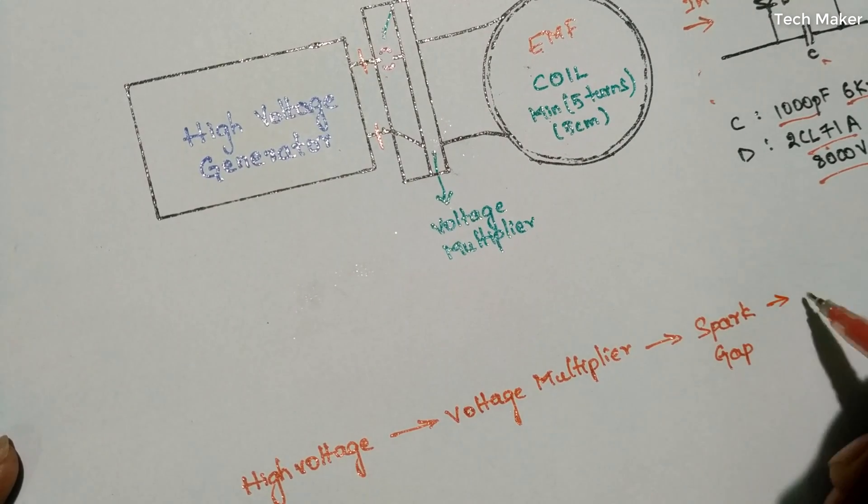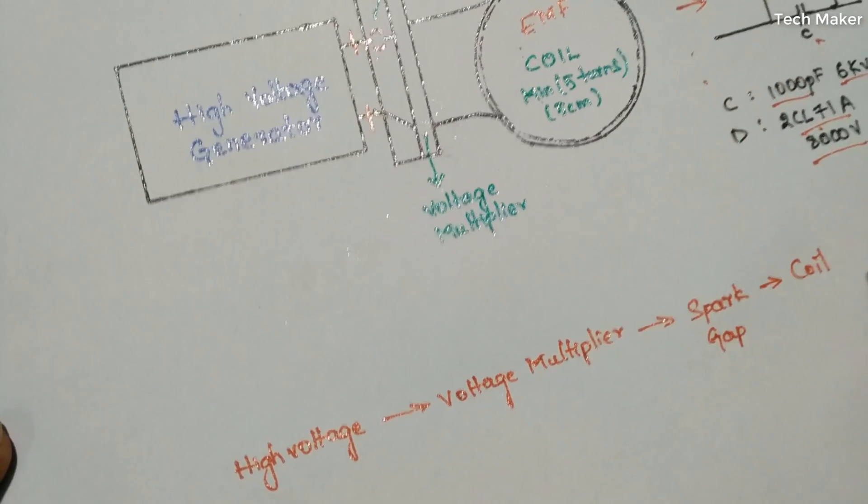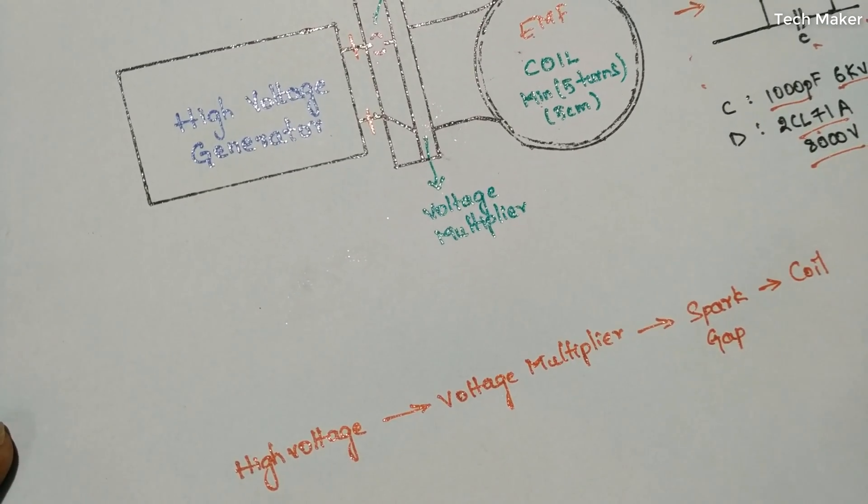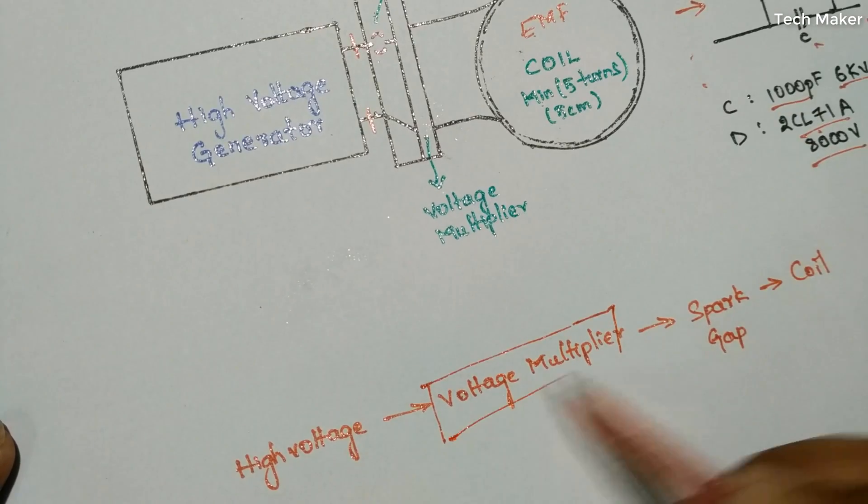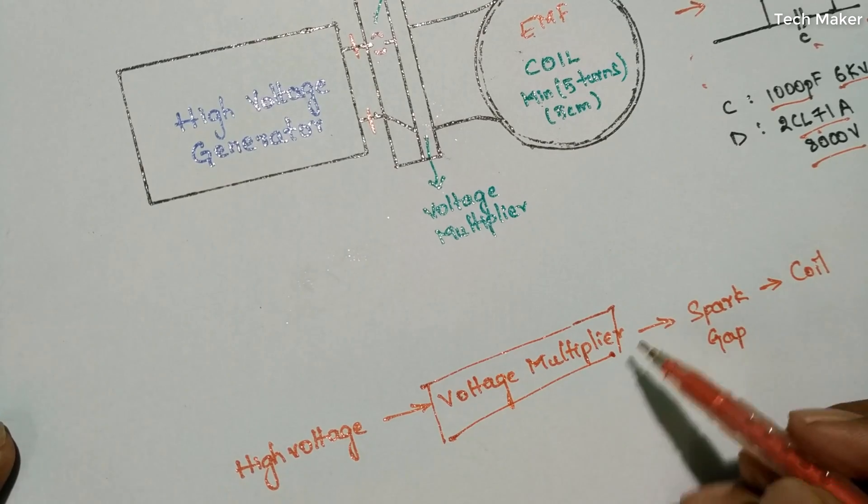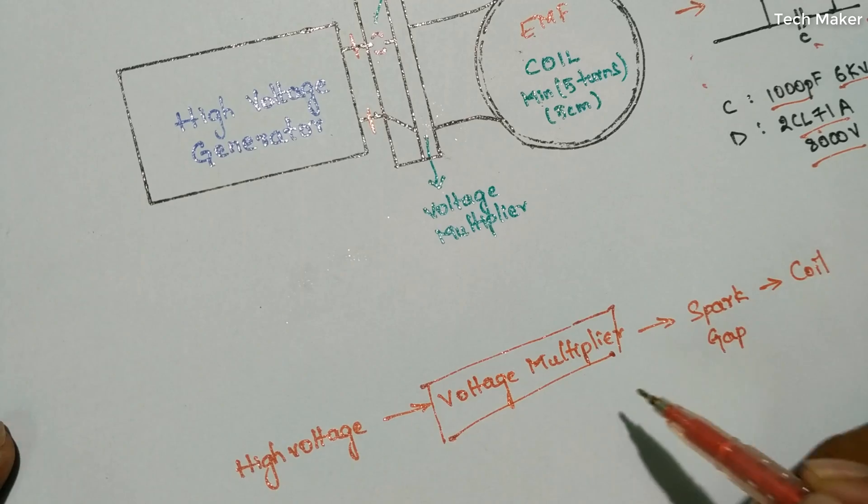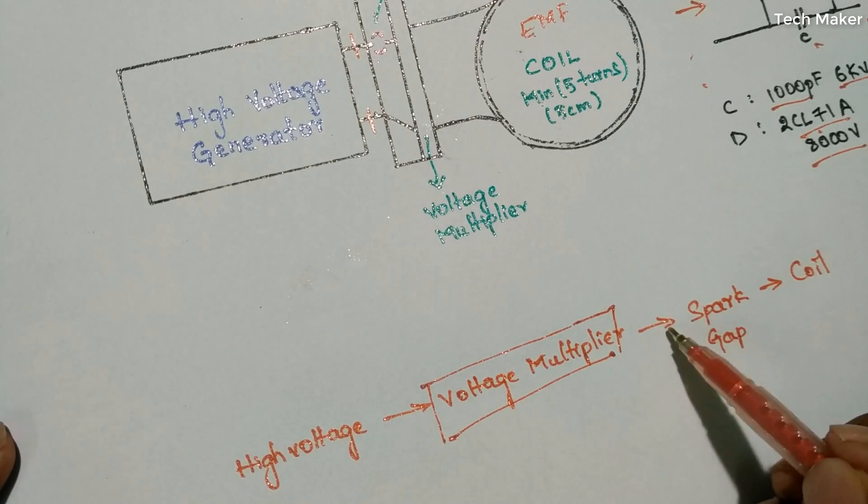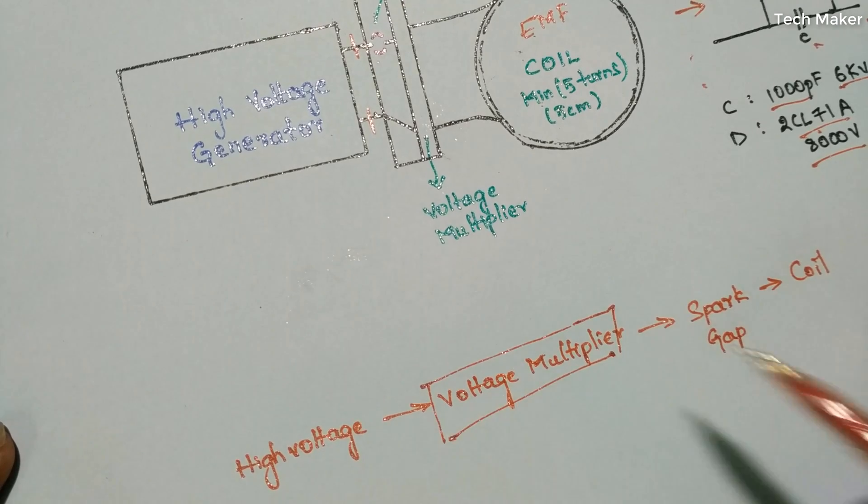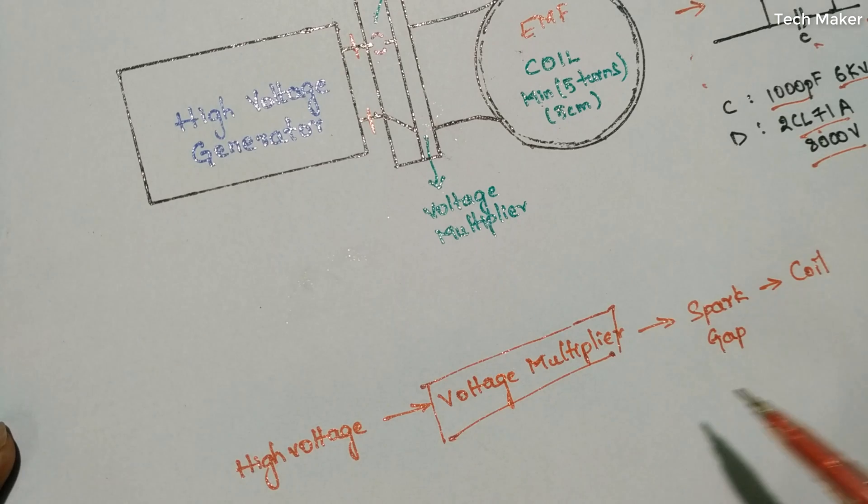And it finally goes to the coil. This is the actual sequence of the EMP generator. This voltage multiplier part is optional. If you want to increase the efficiency and destruction range, you need to add the voltage multiplier here before the spark gap and after the high voltage generator. That's all about this tutorial. If you have any more questions, please comment below and I will clear them.